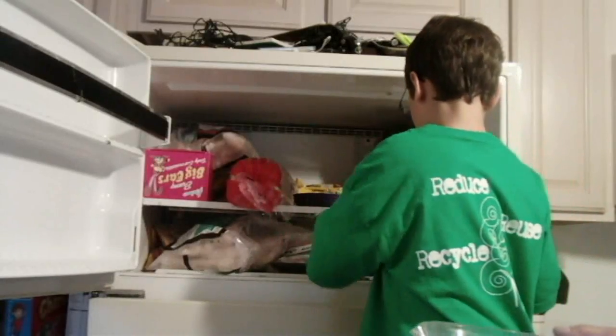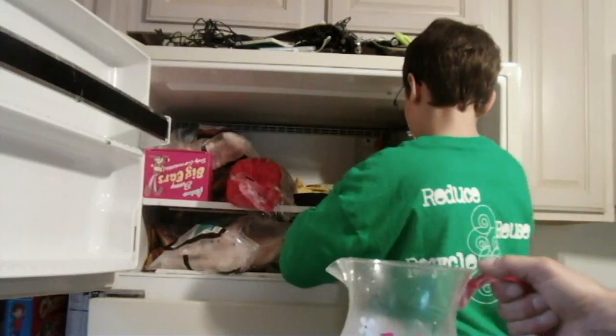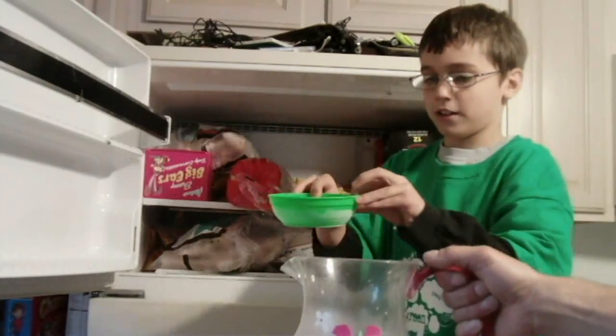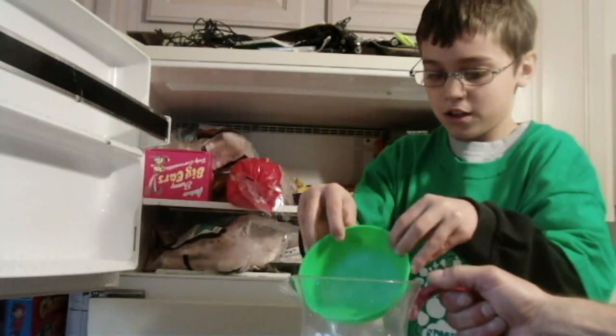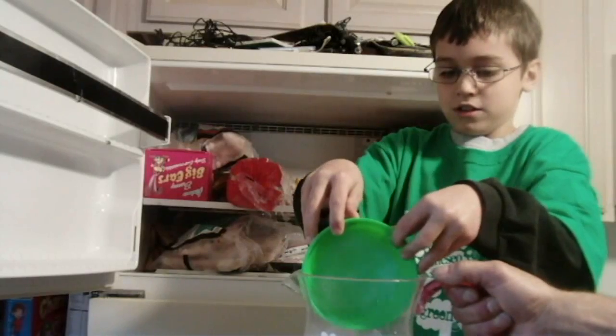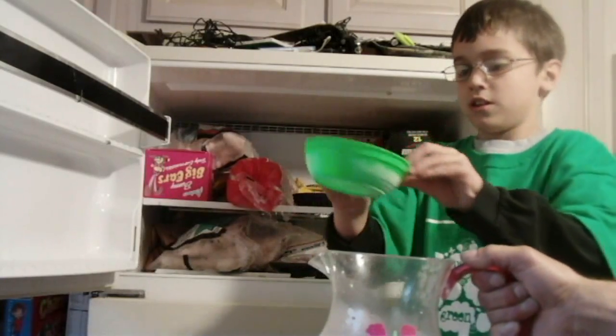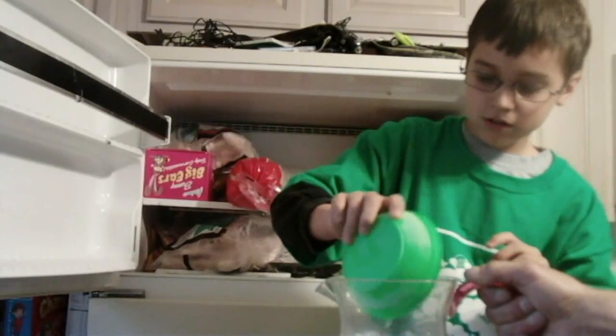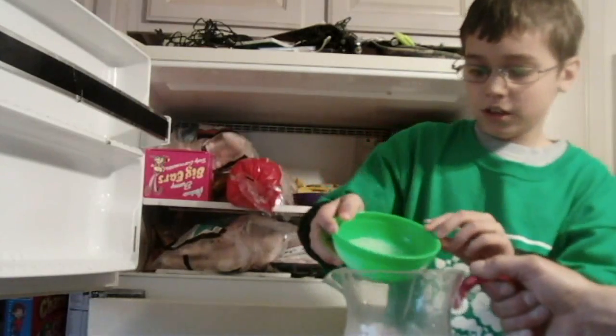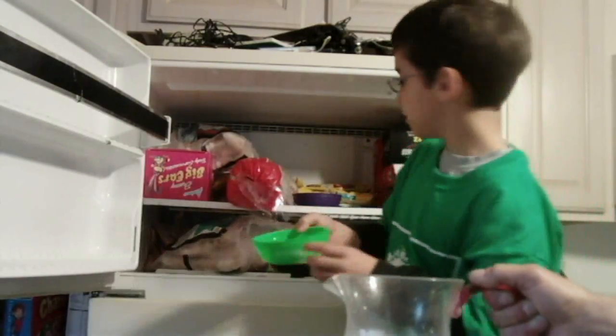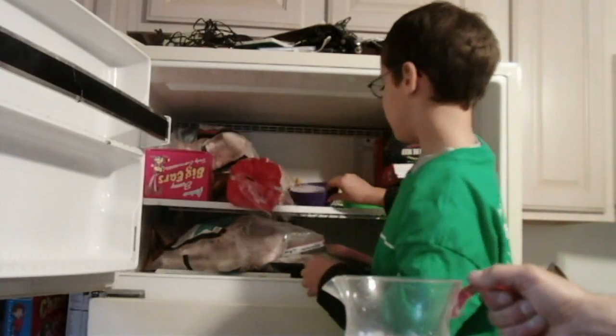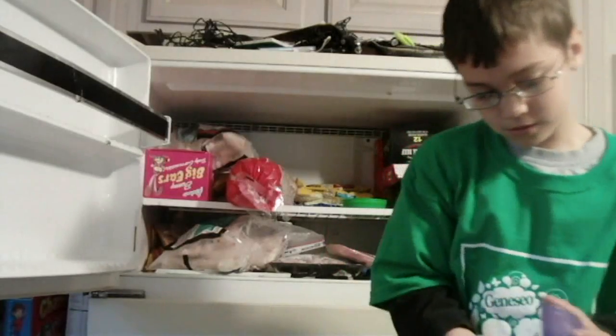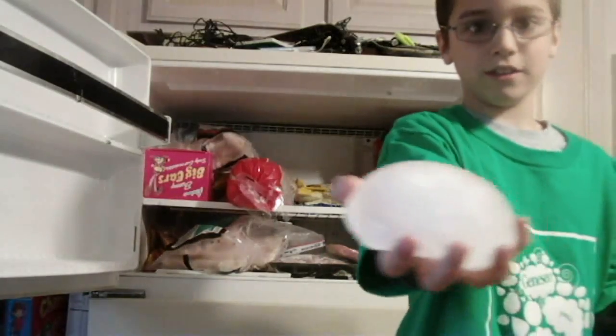And now I'm going to show you what's in the green bowl. That's where I put the rock salt. And there's a little bit of slush. Now I'm going to show you what's in the purple bowl. Ice.